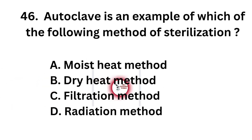Question number 46. Autoclave is an example of which of the following method of sterilization? Option A: Moist heat method. Option B: Dry heat method. Option C: Filtration method. Option D: Radiation method.